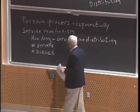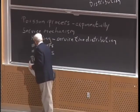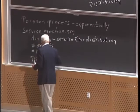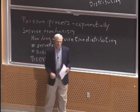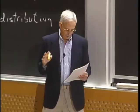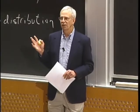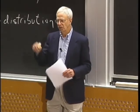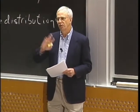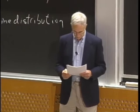Another question is whether we allow preemption. In some queuing systems, a server can stop processing a customer to deal with an emergency customer. In others, once a job is started it has to run to completion. You get very different performance depending on whether you allow preemption or not.